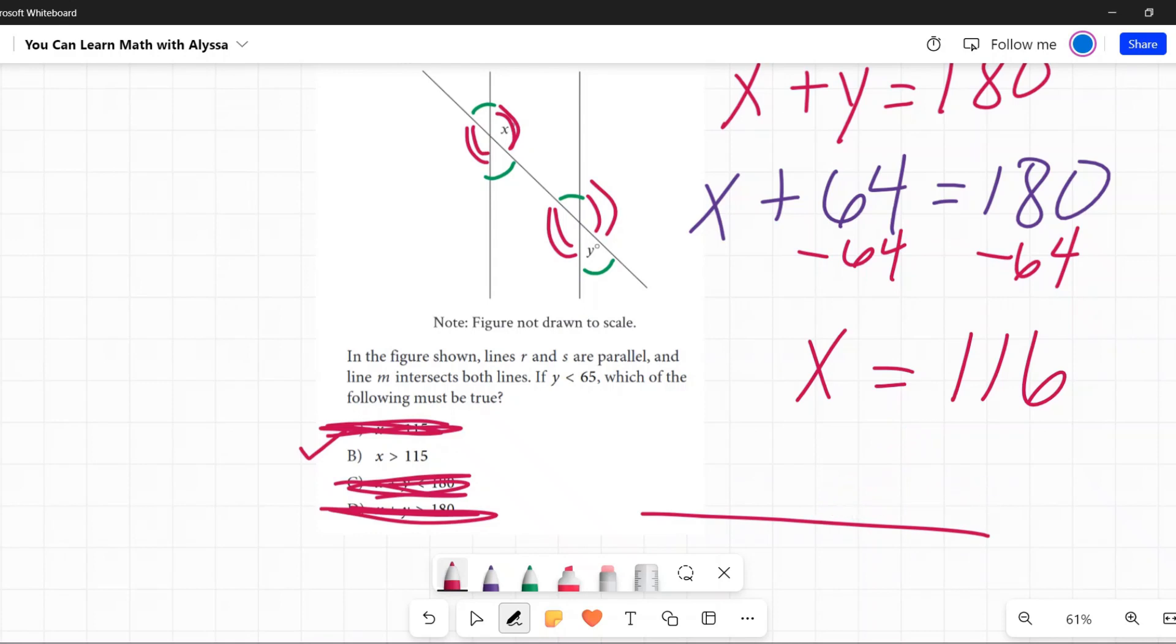If y were equal to 65, x would be 115. But because y is less than 65, x must be greater than 115 to both add up to 180.